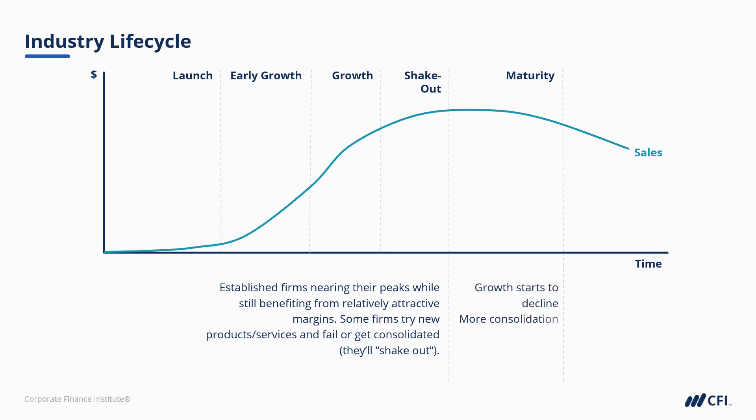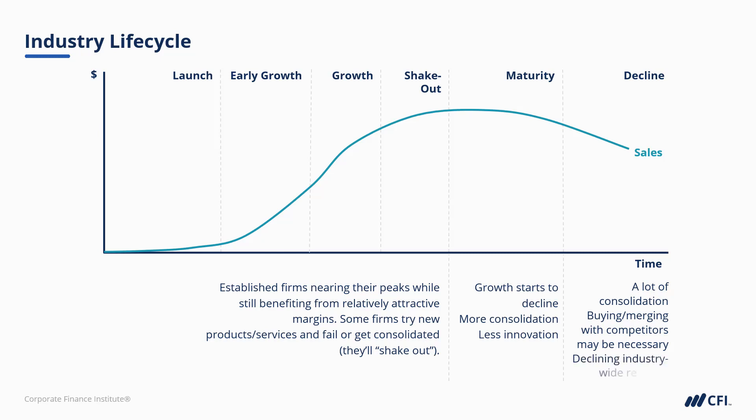Then comes a maturity phase where revenues stabilize before ultimately starting to decline. Growth has hit its peak, more and more consolidation is going on, and much less innovation is happening. Then, finally, industries start to decline. And here, there's generally a lot of consolidation. In fact, buying competitors or merging with them may be the only way to stay viable, since industry-wide revenue is declining rapidly and organic growth is basically impossible.